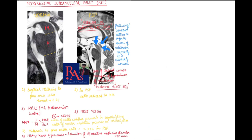In the radiological features, MRI is the investigation of choice. On MRI, very importantly, you will see midbrain atrophy. In midbrain atrophy, the first marker is the midbrain-to-pons area ratio, which is calculated on the sagittal plane.